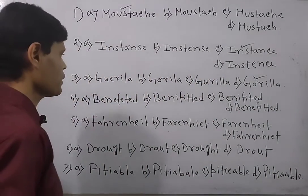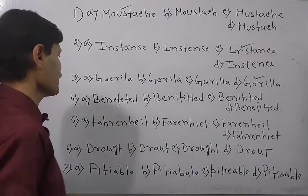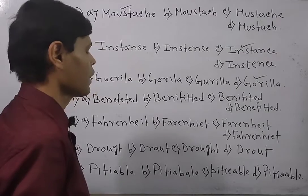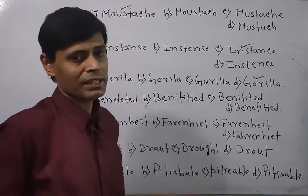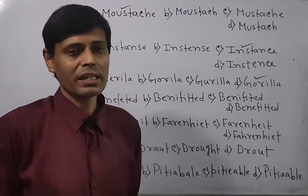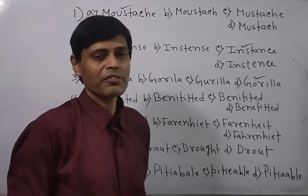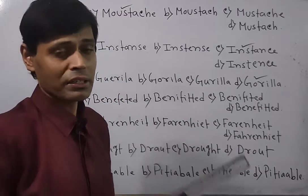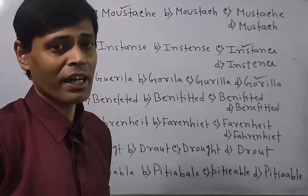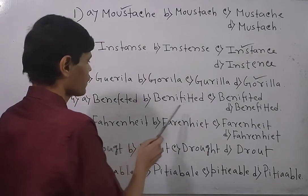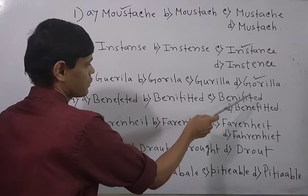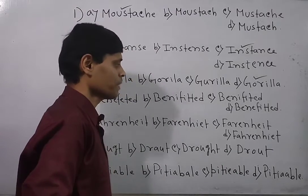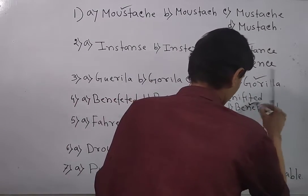Now look at the next question — the word is BENEFITED. First spelling is B-E-N-E-F-E-T-E-D, second is B-E-N-I-F-I-T-E-D, third is B-E-N-I-F-I-T-E-D, fourth is B-E-N-E-F-I-T-E-D. The base word is BENEFIT — B-E-N-E-F-I-T. When you write BENEFITED it should be B-E-N-E-F-I-T-E-D. The vowel should be E, not I, in the root. The correct spelling is in option D — B-E-N-E-F-I-T-E-D — this is the correctly spelled word.